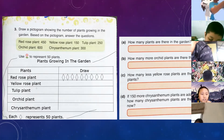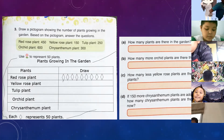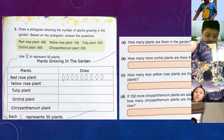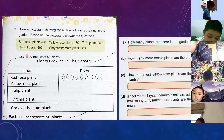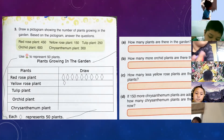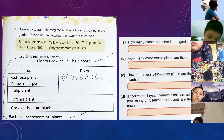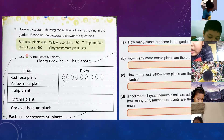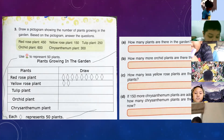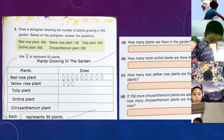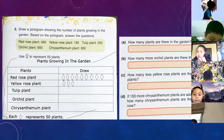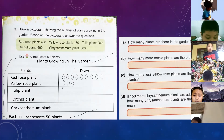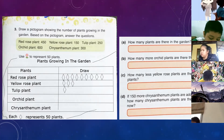Yellow rose plant has 150, so I'm going to draw three diamonds. One, two — this is 100 — and three, this is 150. Okay, but this is just online so I cannot draw a proper flower.